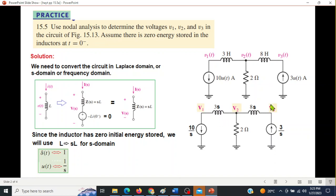Vs have been written in capital form. And 10U(t) will become 10 over S, and 3U(t) will become 3 over S. So from here we will use nodal analysis to solve this circuit.